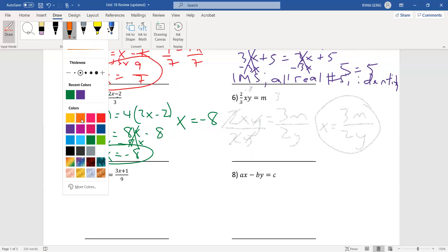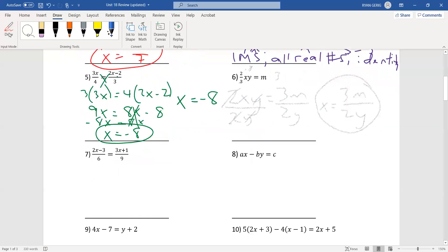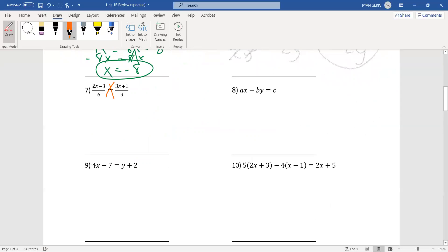Let's go with orange on this one. Another proportion. So, 9 times 2x minus 3 equals 6 times 3x plus 1. Distribute. I get 18x minus 27. 6 times 3x is 18x plus 6. The 18x's are going to cancel. If I subtract them from both sides, they're both going to cancel. And, I'm going to be left with negative 27 equals 6. Those numbers are not equal. This has no solutions.